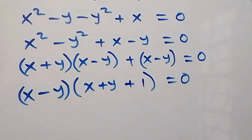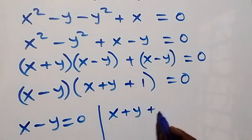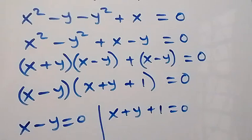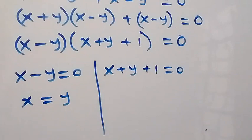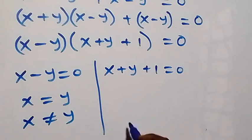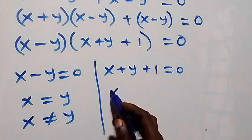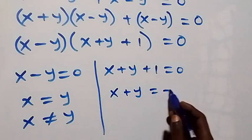From here we have 2 possible cases: x minus y equals to 0, and the second one, x plus y plus 1 equals to 0. From x minus y equals 0 we get x equals y, but we should note that x is not equal to y. So following the other case, taking 1 to this side, we have x plus y equals to minus 1.